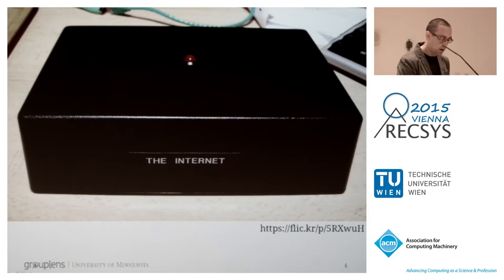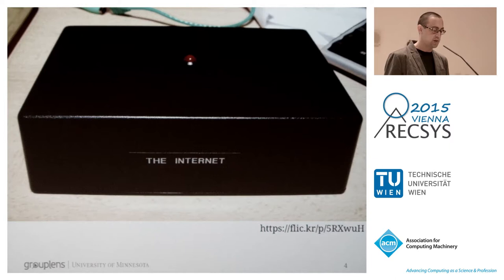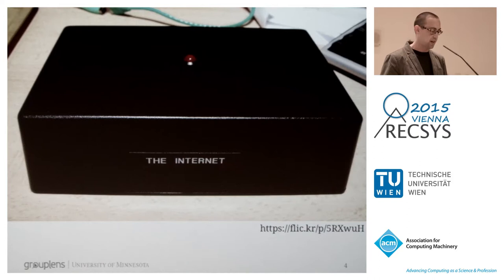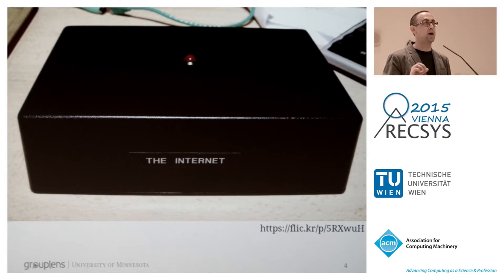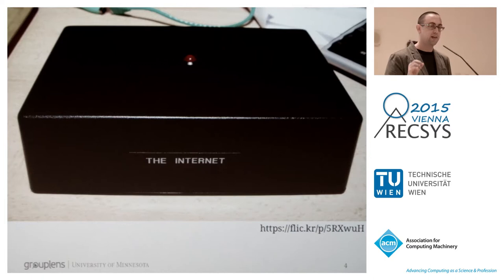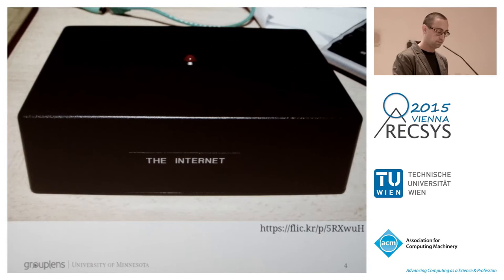Let's start with discussing the problem. Recommender systems are black boxes. In general, we're interested in getting really great recommendations. In pursuit of this goal, we provide recommenders with our data honestly — we rate things honestly, we browse things we actually like. We might be curious about how the algorithms use our data, but ultimately we're uncertain how those actions impact results. Systems where we understand inputs and outputs but not what happens in the middle are known as black boxes, and most recommenders are black boxes to users.